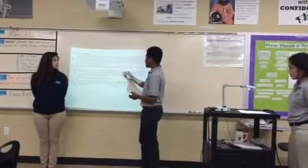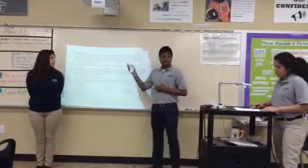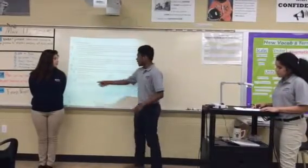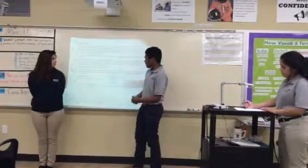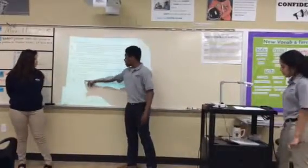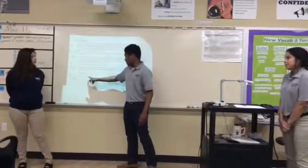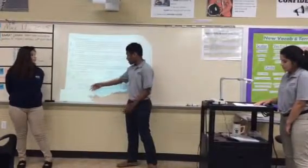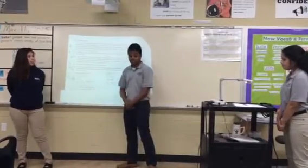In question A, we're trying to find the final velocity. The problem gives us acceleration, initial velocity, and time. So we need to use the equation final velocity equals initial velocity plus acceleration times time to get the final velocity, which is negative 46.06 meters per second.